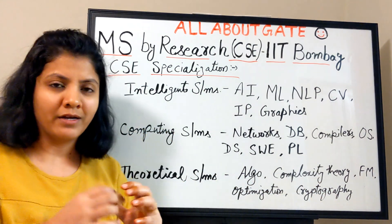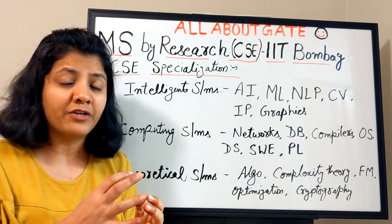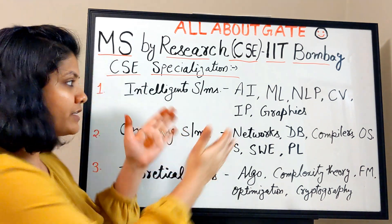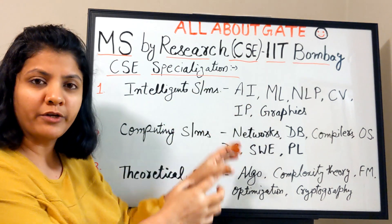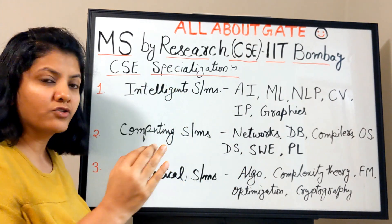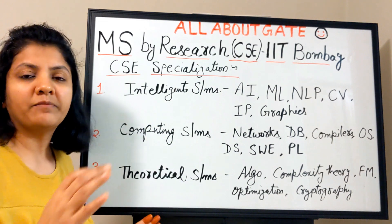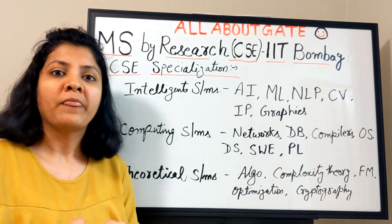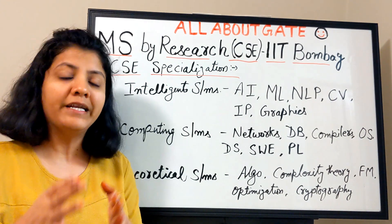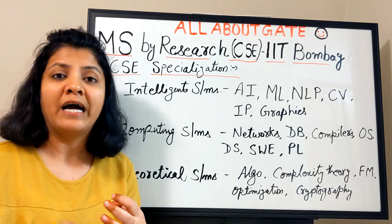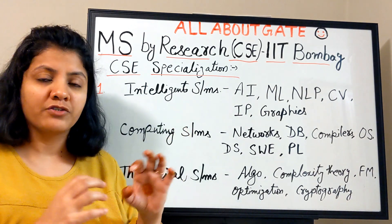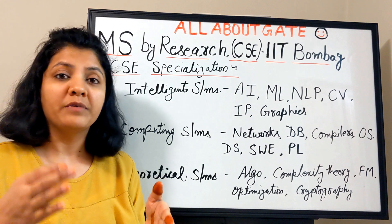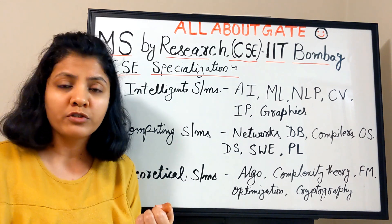These specializations are simply a classification of related topics and research areas. Related areas have been grouped together under one specialization name. Whichever specialization you are selected for, you are intended to work under that specialization throughout your entire MS — your coursework, research work, and thesis work will all revolve around that area.